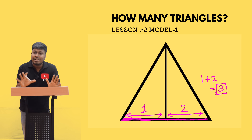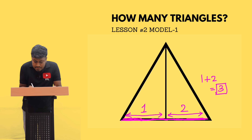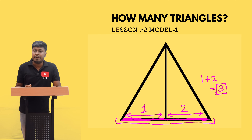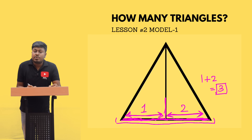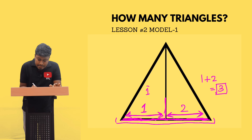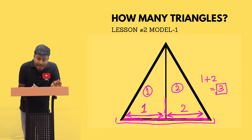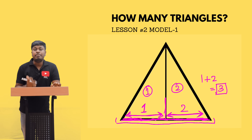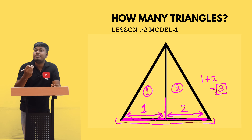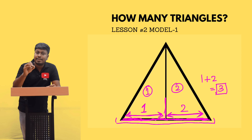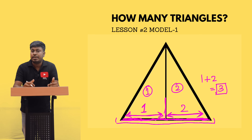Let me teach this again. First, see the base of the triangle. Second, check how many parts that base is separated into due to the internal lines. Here the baseline is split into two parts — part one and part two. Denote each part with a number, then add all the numbers: 1 plus 2 equals 3. So there are three triangles. This is the technique to solve all model number one questions, with some exceptional cases I will also cover.